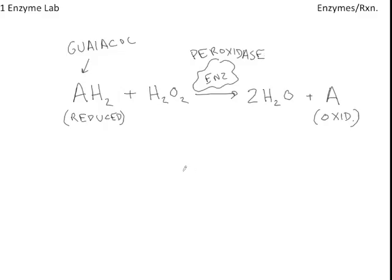Your instructor will extract some peroxidase enzyme from a turnip at the start of lab. The Guaiacol in its reduced form and the hydrogen peroxide — these two substrates enter the active site of the peroxidase, and then this reaction is catalyzed.